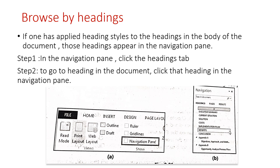To summarize browse by headings: if there is a huge document with many pages and you need to find a particular point, use the browse by headings option in the Navigation Pane. Go to the Navigation Pane (image A), click on the Headings tab, and all headings used in that document are displayed. Click on the desired heading and you will jump to that particular page — without scrolling up and down.